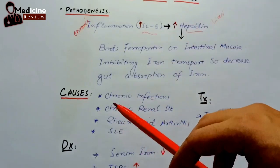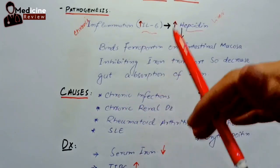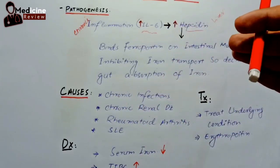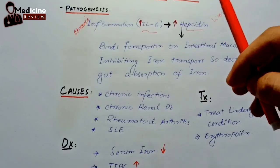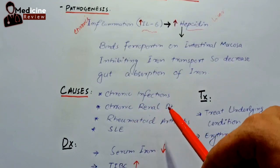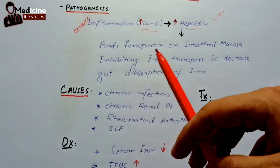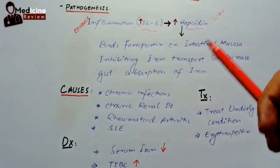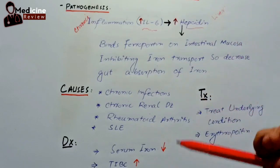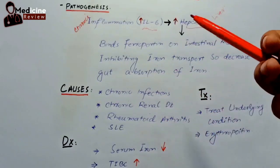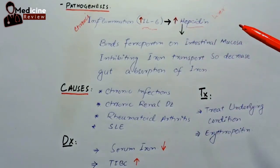So whenever any chronic disease — whether inflammation or infection — occurs, through this process anemia of chronic disease develops. The common causes include chronic infections, with TB at the top of the list, chronic renal diseases, rheumatoid arthritis, and SLE, which are types of autoimmune diseases.